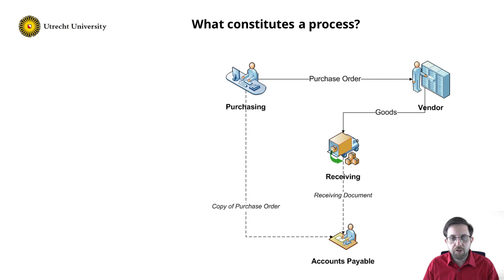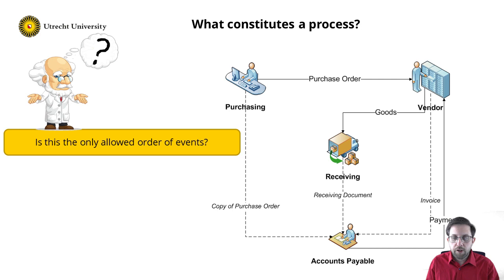The vendor also sends an invoice to the organization. The accounts payable office checks the invoice with the receiving document and the purchase order. And as all checks are okay, the office pays the vendor. This is an example execution of the purchase-to-pay process, as often described by people who execute the process.